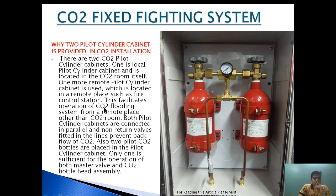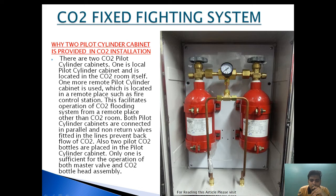For remote operation of the CO2 flooding system from a place other than the CO2 room, both pilots in the cabinet are connected in parallel. A non-return valve fitted in the line prevents back-flowing of the CO2. Two pilot bottles are placed in a pilot cabinet, and only one is sufficient for operating both the master valve and the CO2 bottle head assembly. A pressure gauge is provided, showing around 56 bar, and an individual unit is sufficient to activate or puncture the CO2 bottle.